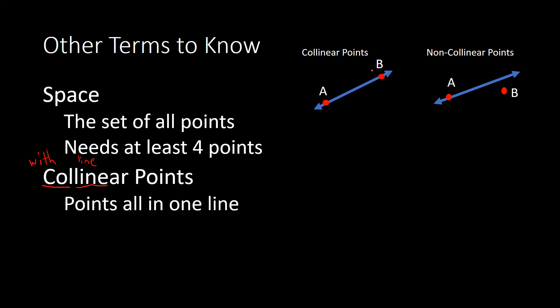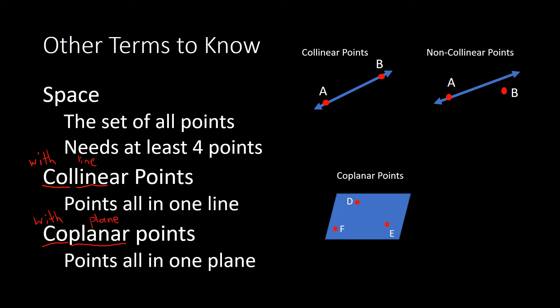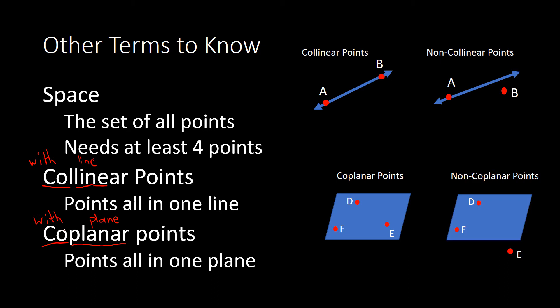A similar term is called coplanar points. Co- means with, and planar looks like plane, so this term literally means points with the same plane. For example, points D, E, and F would be coplanar because they're all on the same plane. Whereas other points would be non-coplanar because they're not on the same plane.